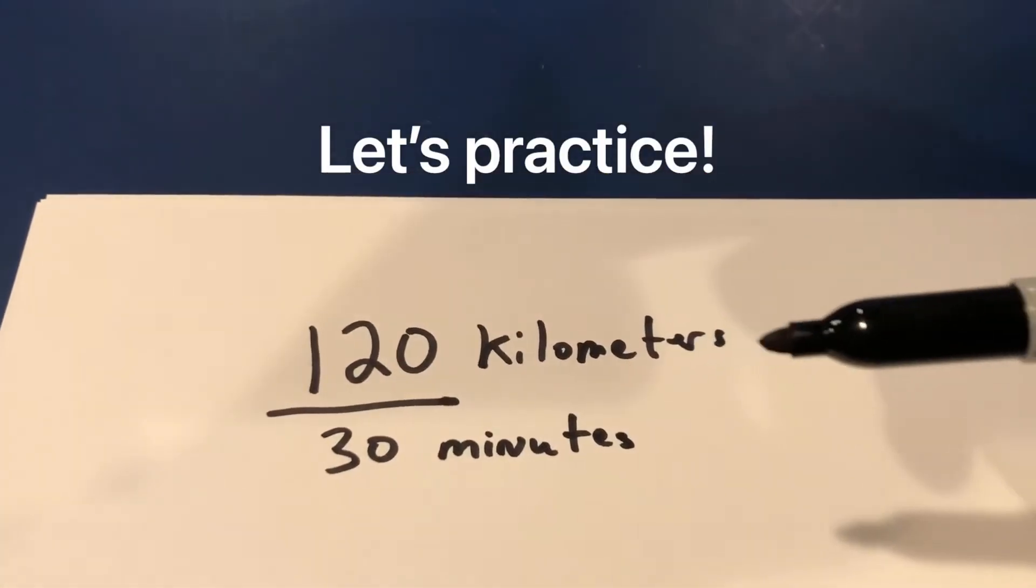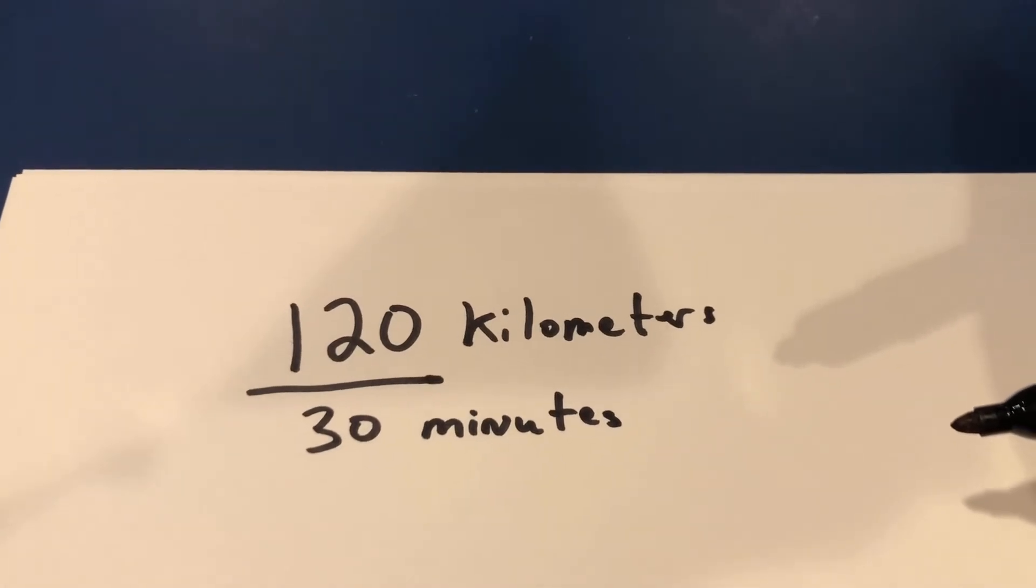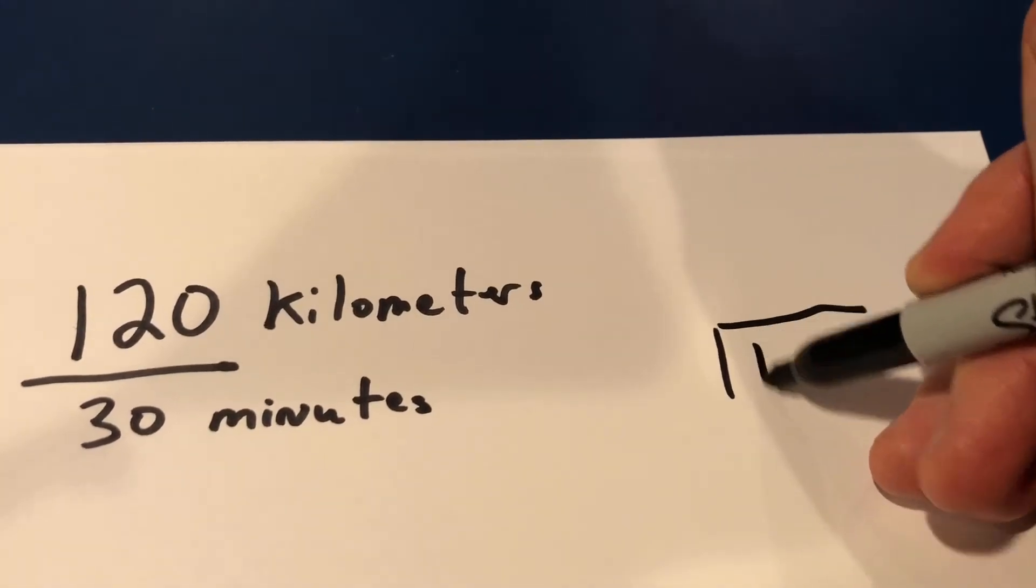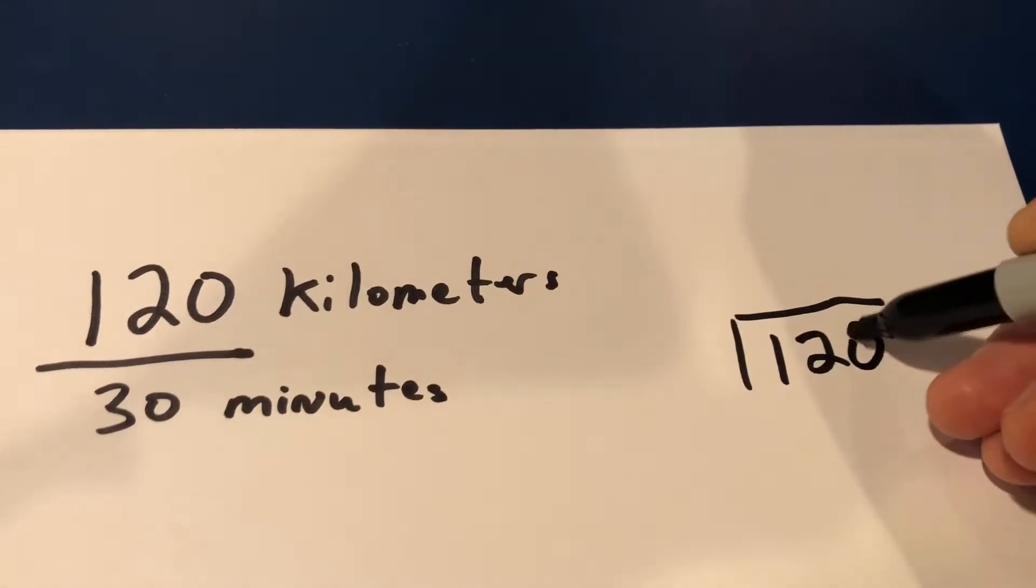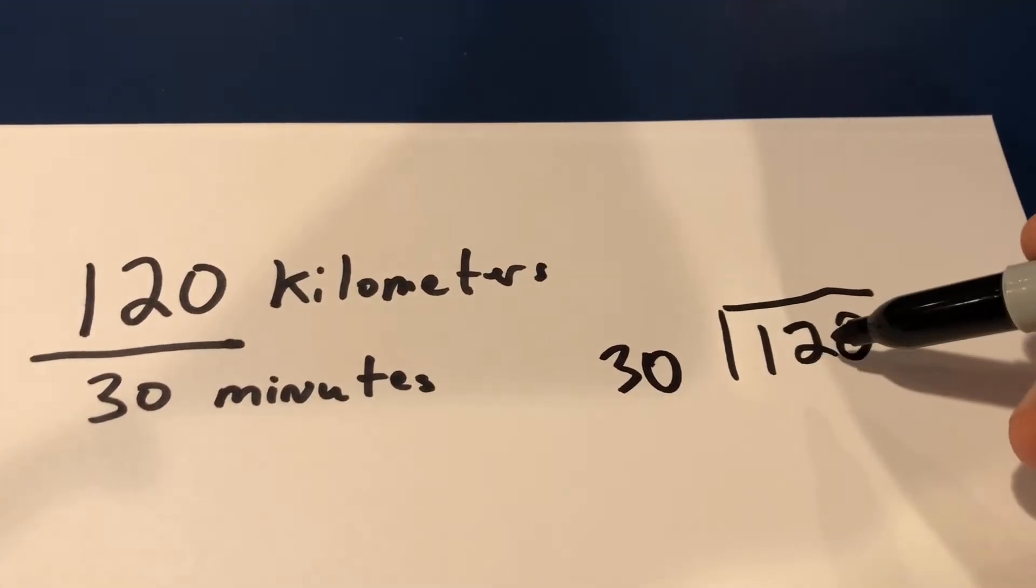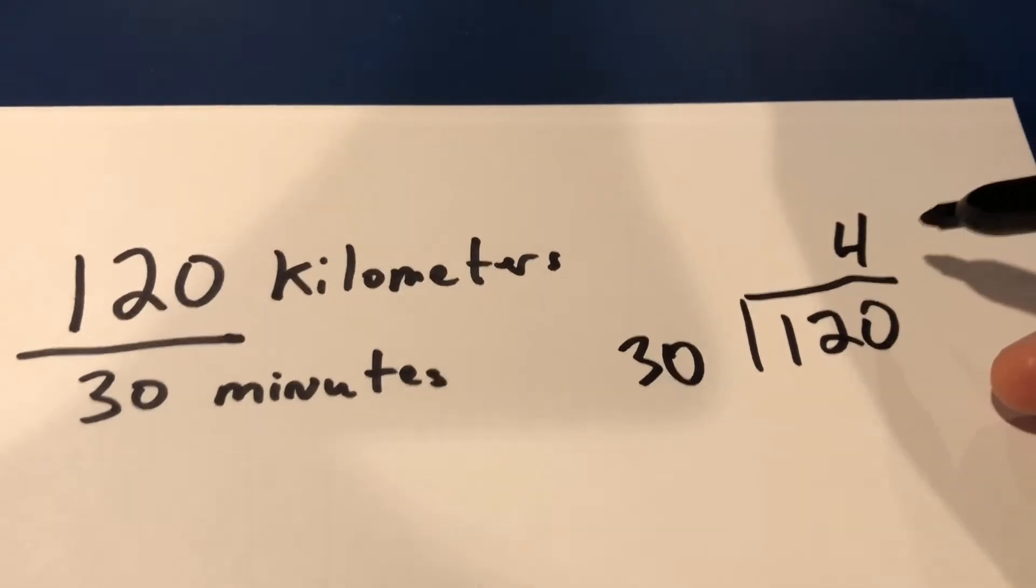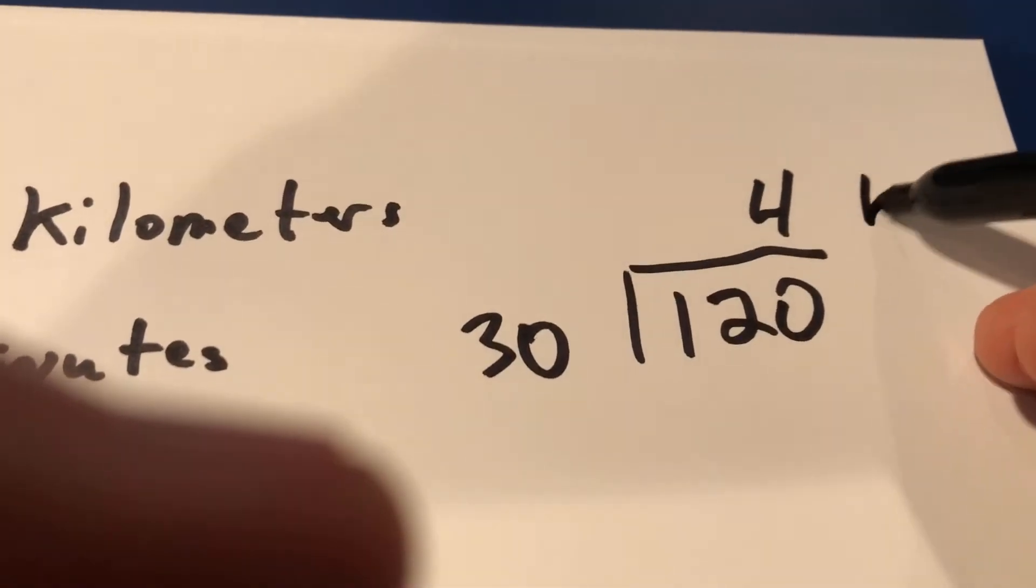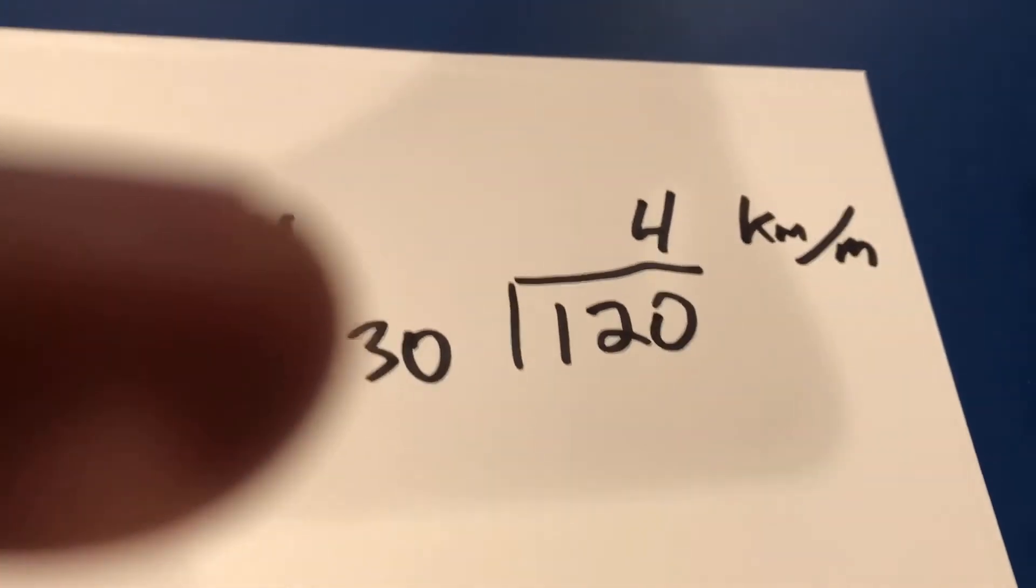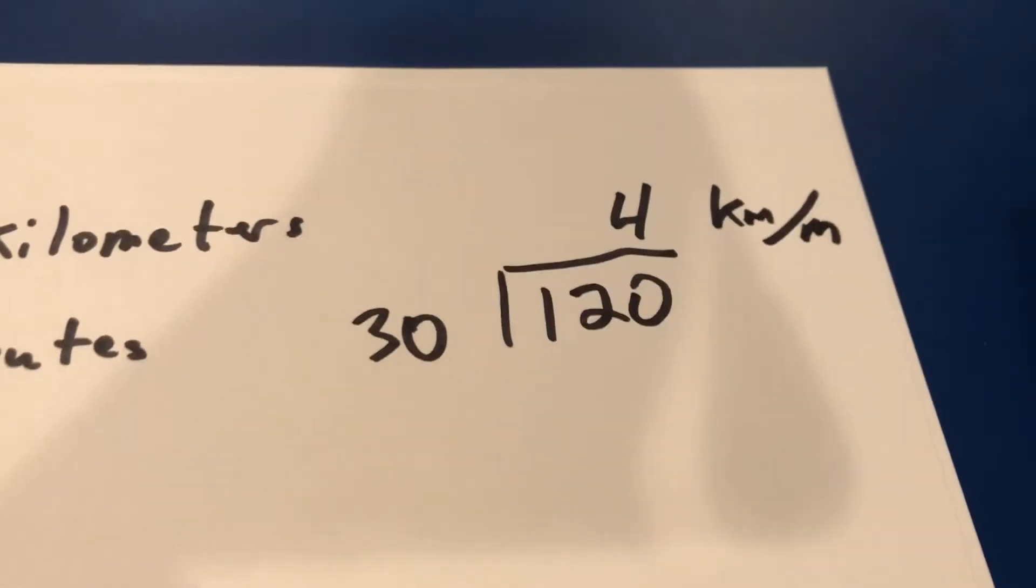Well, let's say I traveled 120 kilometers in 30 minutes. I want to find the rate of speed. So I put 120 into the box and 30 on the outside of the box. 30 goes into 12? Nope. Goes into 120 four times. So I was going 4 kilometers per minute. That's the rate of speed. If I want to turn it into a velocity, I would mention that they were headed north.